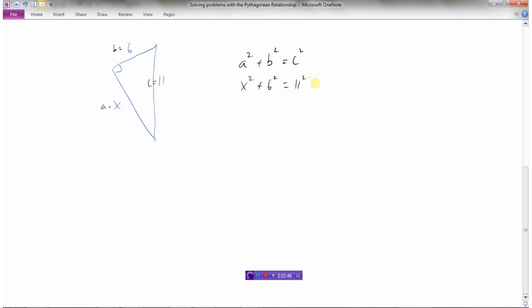So X squared plus 6 squared equals 11 squared. Now 6 squared is 36. 11 squared, 11 times 11 is 121. So at this point here, I'm trying to find out what X is. I have X squared plus 36 equals 121. So I don't want this plus 36 here. So I'm going to subtract 36 from both sides. So on my left side, now this is gone. And on the right side, I have 121 minus 36, which is 85.